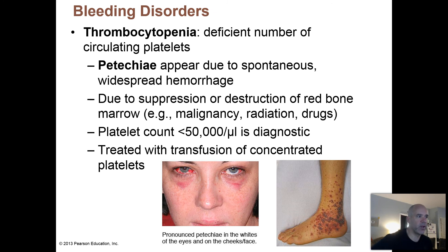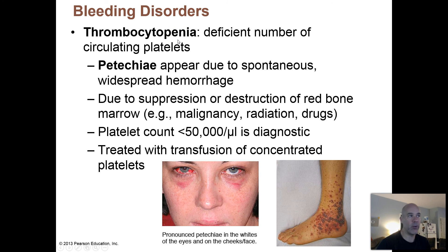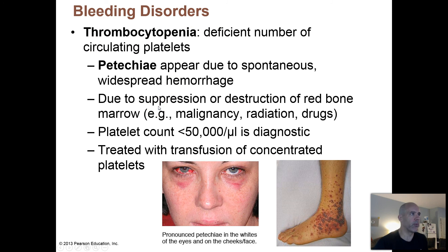Now let's talk about some bleeding disorders. Thrombocytopenia: remember, leukopenia meant an abnormally low number of leukocytes. Thrombocytopenia is an abnormally low number of thrombocytes — also known as platelets. Since platelets are very important in blood coagulation, if you're not making these at adequate levels, you're not going to be able to clot your blood quite as efficiently.